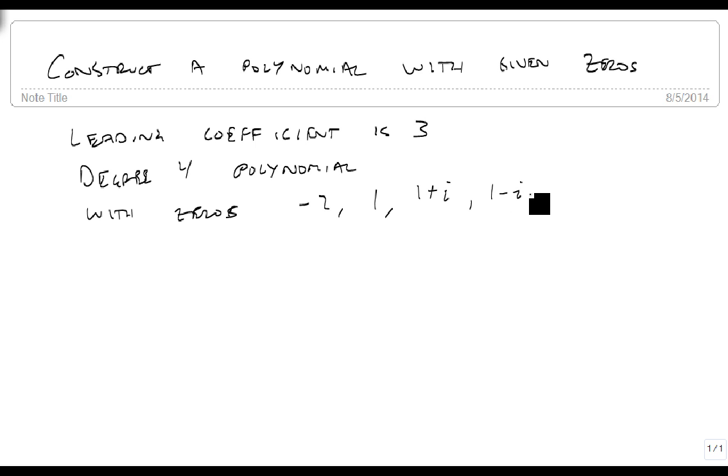So this gives us the following information. We know that the polynomial function is going to be equal to 3 times 4 sets of parentheses. It's a degree 4 polynomial, and there's 4 pieces.